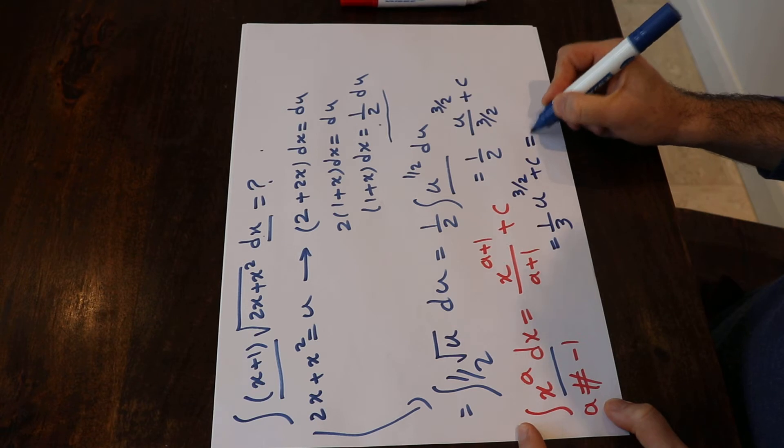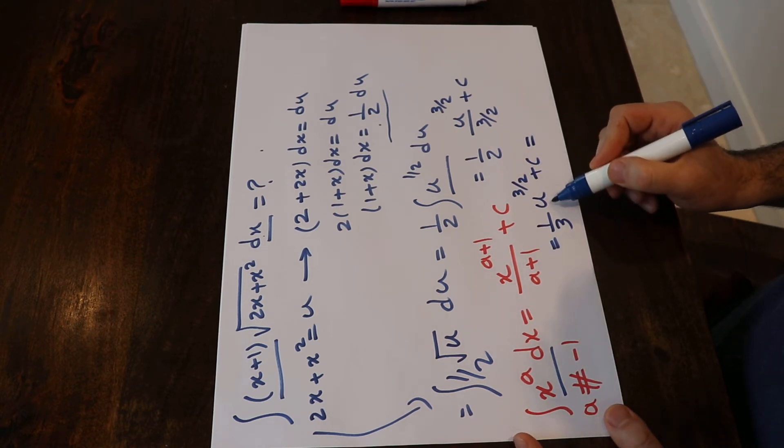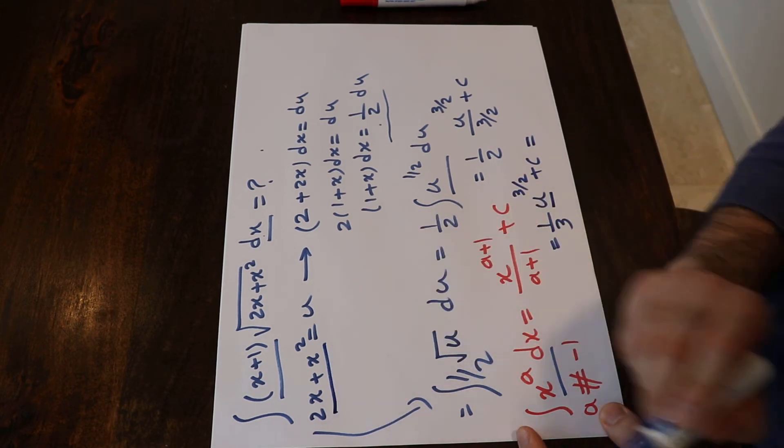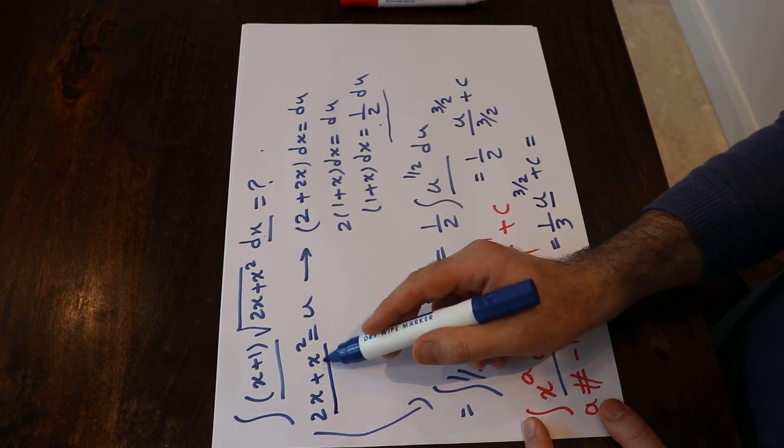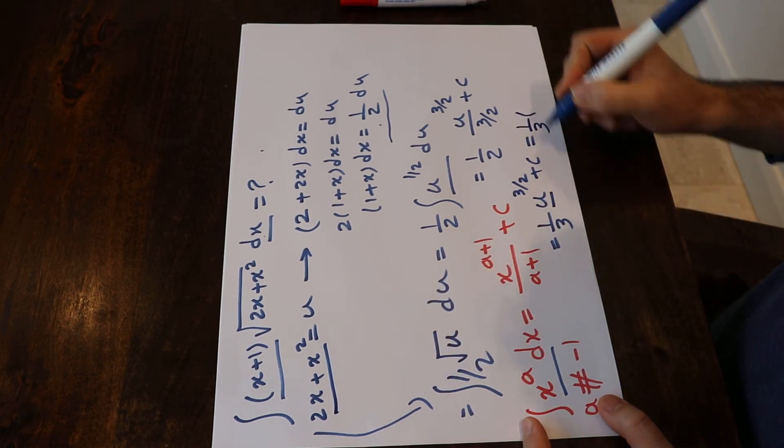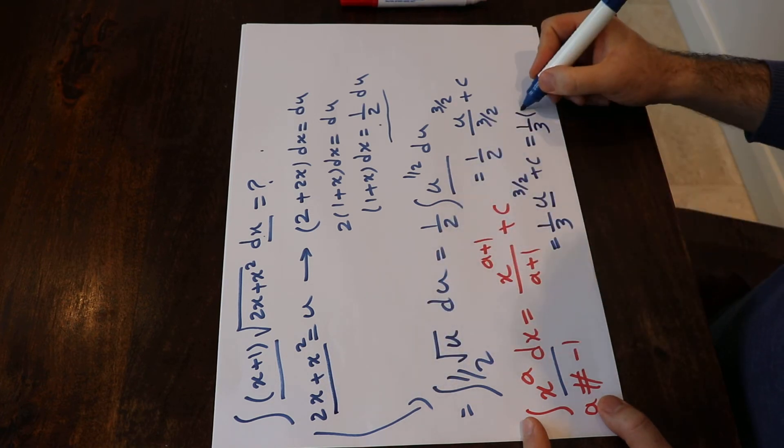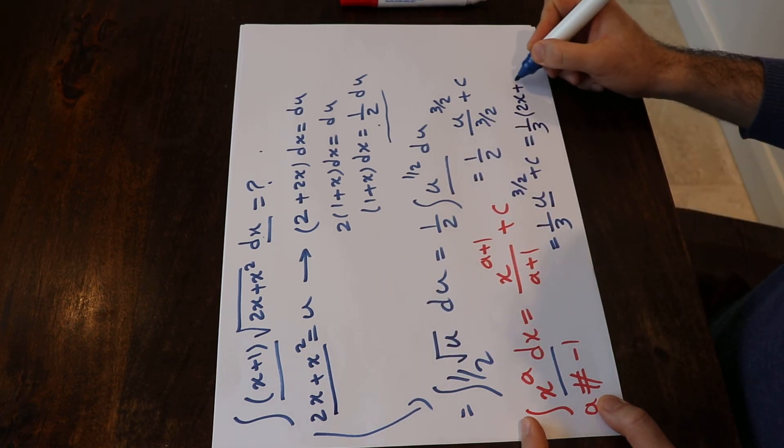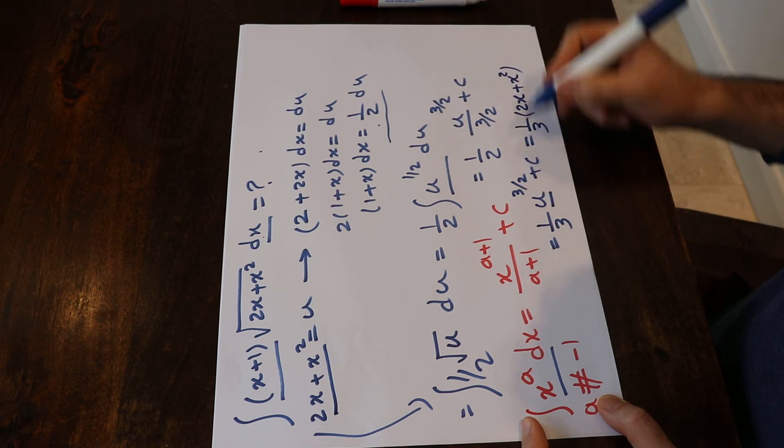And all you need to do at this stage is to substitute the parameter u by the definition you used at the beginning, that is 2x+x². So this one will be equal to 1/3 times (2x+x²)^(3/2) plus c.